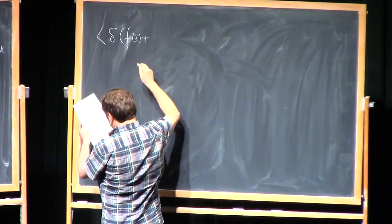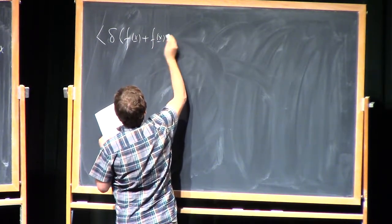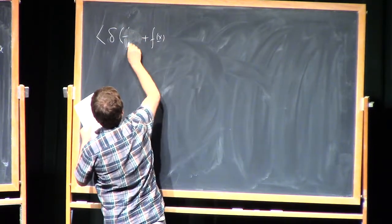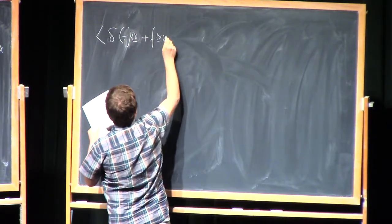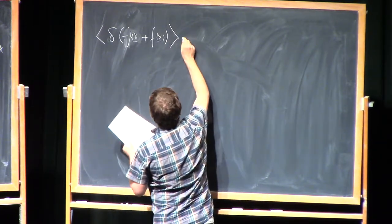Delta functions in some sense are nice objects. So we have minus mu x plus f of x. We need to average this.